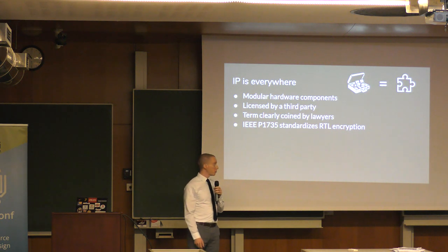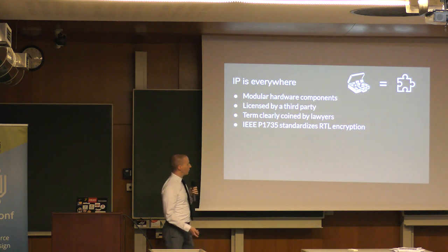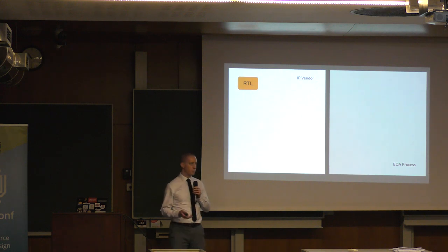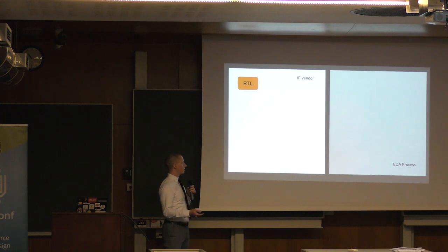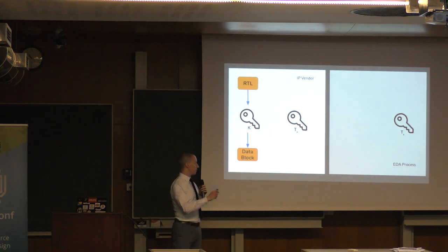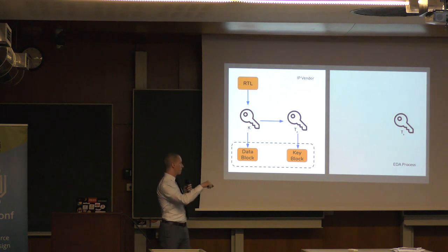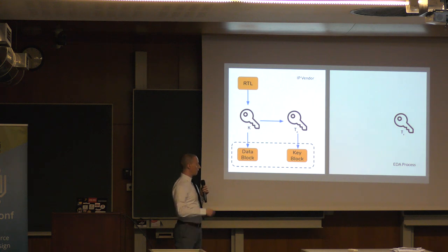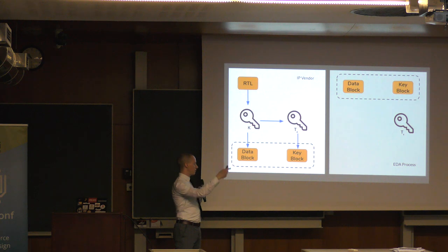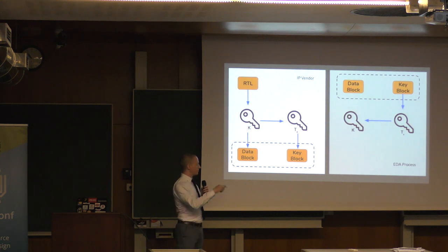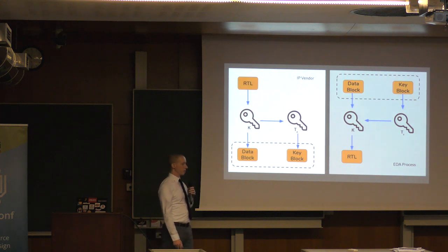It's not required that anyone distributes this way — they can distribute plain text RTL if they want — but this is how a lot of IP is often distributed. The basic idea is that the IP vendor takes their secret RTL, runs it through a symmetric encryption key, and produces an encrypted data block. They get the public half of a public-private key pair from an EDA vendor, encrypt their symmetric key to produce the key block. This pair — the data and key block — is the shipped encrypted RTL that goes to the end user, who inserts it into their EDA tool, which has the secret half of the key pair. The secret key decrypts the IP vendor's symmetric key, which in turn decrypts the data block to get the RTL to simulate, synthesize, or whatever.